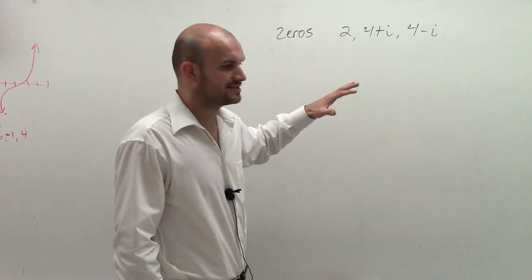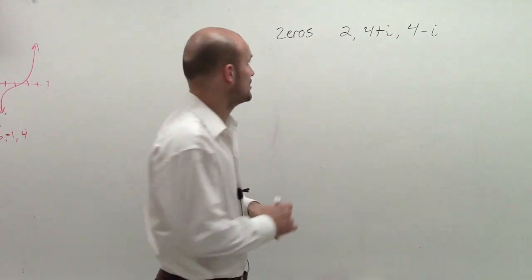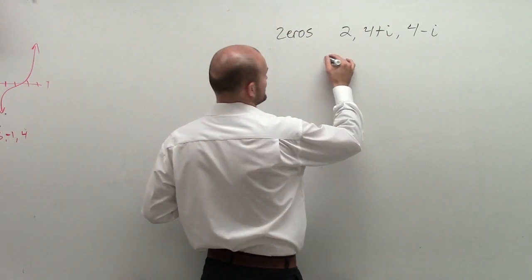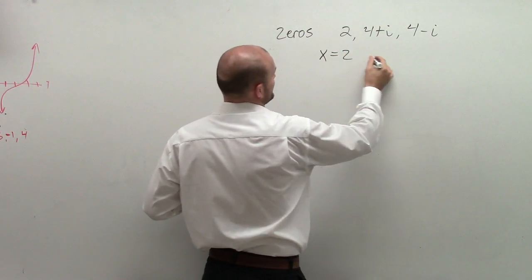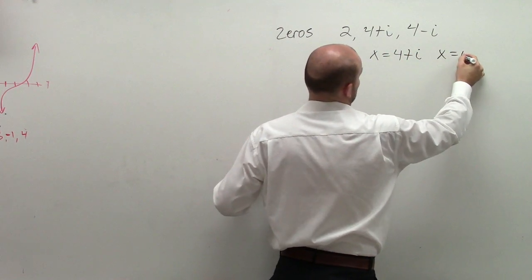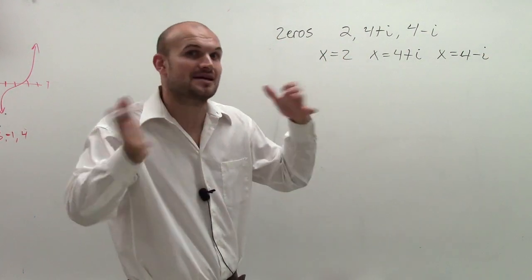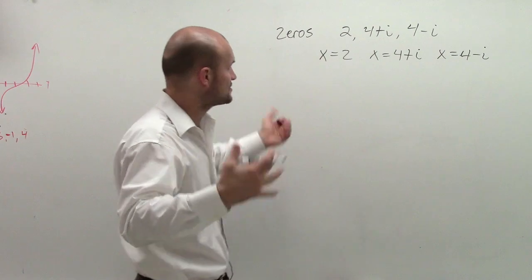So remember, when we have our zeros, we need to write them as factors. Remember, we got our zeros because, really, x equals 2, x equals 4 plus i, and x equals 4 minus i, right? Because those are your zeros, x equals those are your x-intercepts, your zeros, your solutions, and so forth.